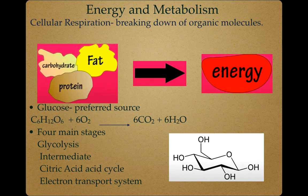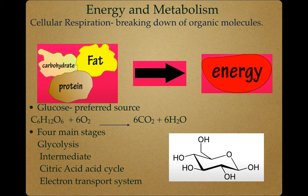Our daily food intake includes carbohydrates, fats, and proteins to produce energy. Cellular respiration is the degradation of biomolecules to generate energy that cells can use. It is sometimes called aerobic respiration. The preferred source for cellular respiration is a simple sugar called glucose. There are four main stages in cellular respiration: glycolysis, intermediate, citric acid cycle, and electron transport system.